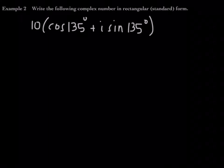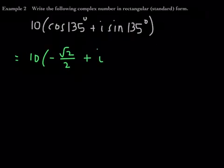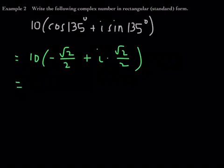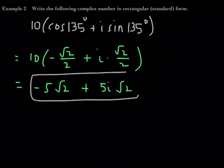Example 2: Write the following complex number in rectangular or standard form. Right now it's written in polar form, and we want to convert it back to standard form. This equals 10 times cosine of 135 degrees plus i sine of 135 degrees. Cosine of 135 degrees is negative root 2 over 2, and sine of 135 degrees is positive root 2 over 2. Distributing the 10 gives us negative 5 root 2 plus 5i root 2. This is the standard or rectangular form of the complex number.